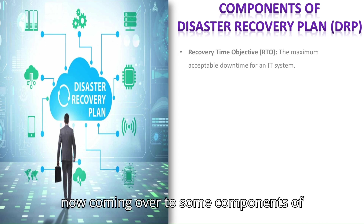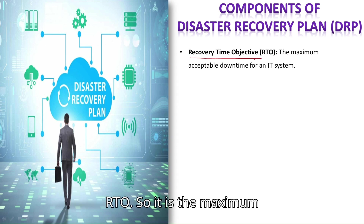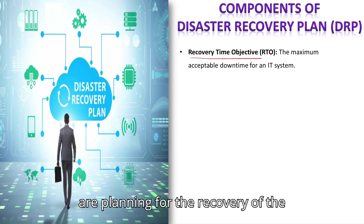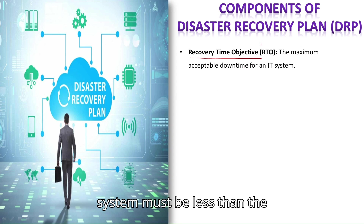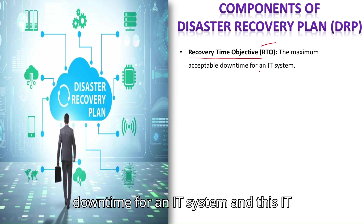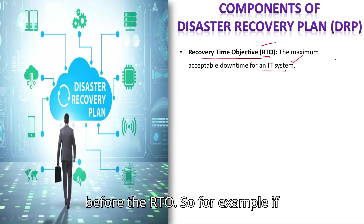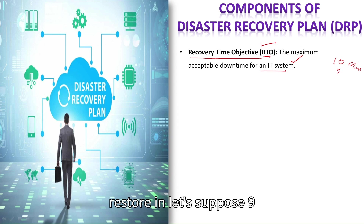Now, coming over to the components of the Disaster Recovery Plan. The first component is Recovery Time Objective (RTO), which is the maximum acceptable downtime for an IT system. When planning for recovery, the time to recover a system must be less than the RTO. For example, if the RTO is 10 minutes, the IT system should be restored in 9 minutes, 8 minutes, or less.